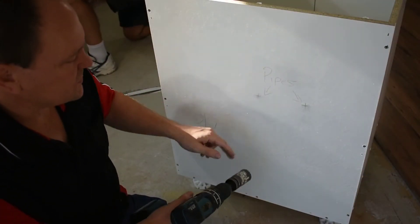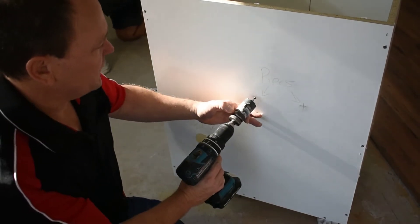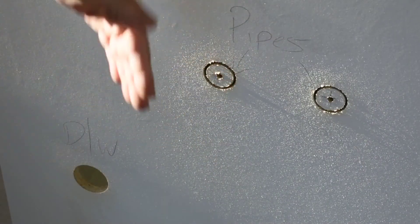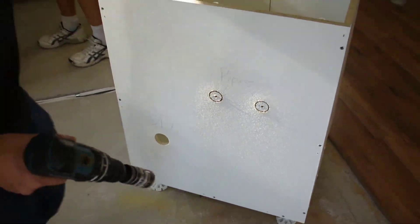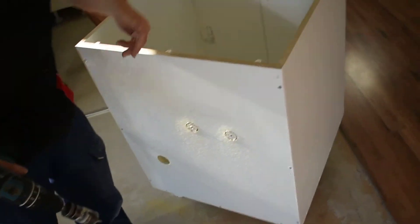So for my hot and water pipes, I'm just going to be using a 40mm hole. And again, the same thing, I'm just going to now drill from the front of the cabinet through to the back.